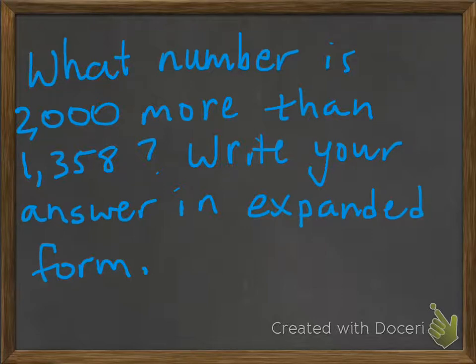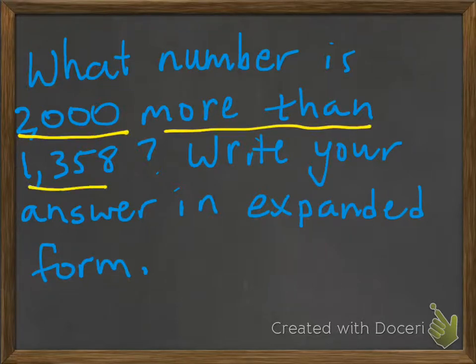All right, how'd you do? So what number is 2,000 more than 1,358? If we write it in expanded form, well, first of all, we would need to add it all together.